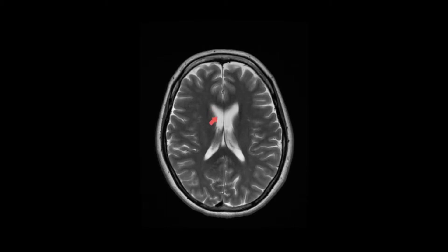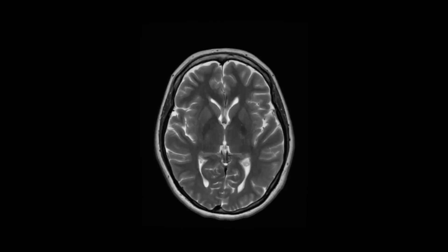This here is the right lateral ventricle and here is the left lateral ventricle. The lateral ventricles have certain defining features, namely a frontal horn that projects towards the frontal lobe. If we come down a couple of slices, you can see here is the right frontal horn of the right lateral ventricle and the left frontal horn of the left lateral ventricle.